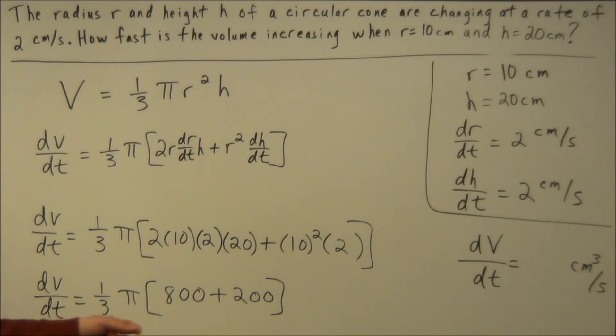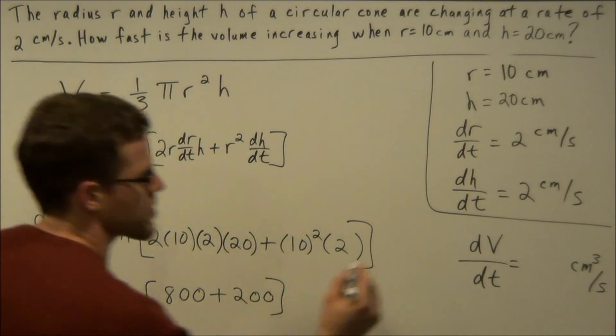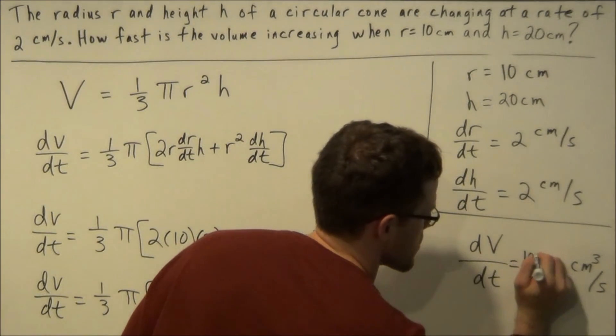So to close this example out we have 800 plus 200 is 1000. So our final answer is going to be 1000 times pi over 3 which we could write as 1000 pi over 3.